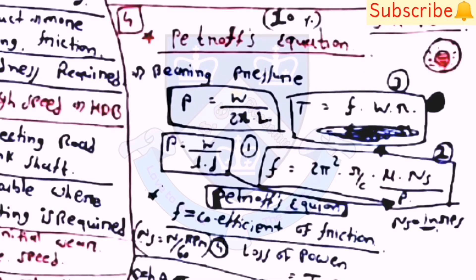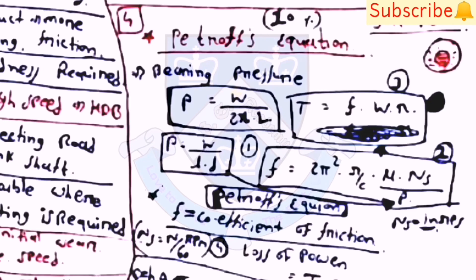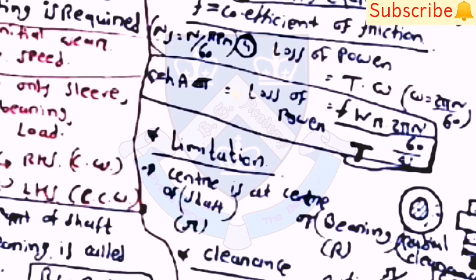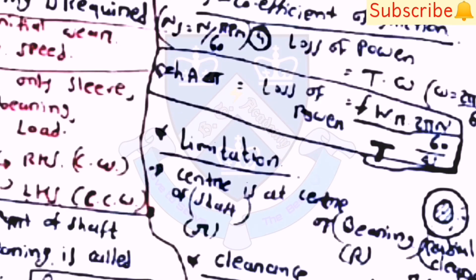Petroff's equation: p = W/(2·R·L), where p = bearing pressure. T = f·W·R. p = W/(L·d). Petroff's equation: f = 2π²·(R/c)·(mu·N_s/p). Loss of power = f·W·R·(2π·N/60).